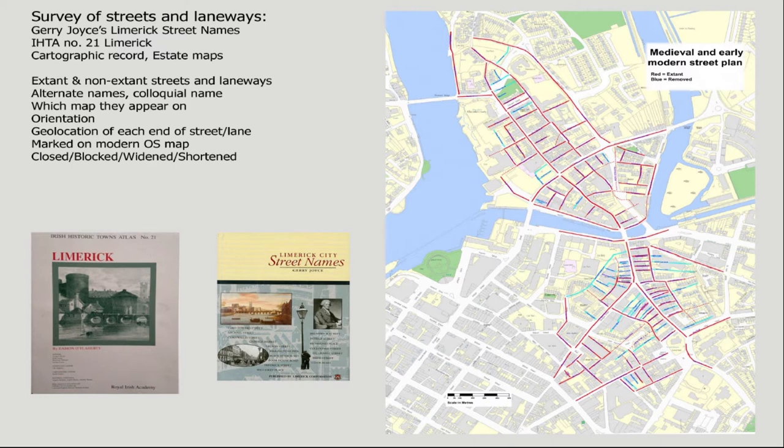The primary focus for even starting to think about whether you can understand and begin a research project like this was through things like Gerry Joyce's book on Limerick street names and, most importantly, the Historic Towns Atlas gazetteer of streets and lanes. If you only have written descriptive references to buildings with no maps accompanying them, how do you know which street is which or which lane is which?